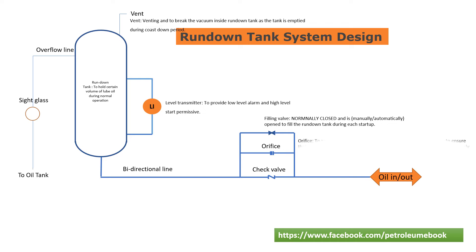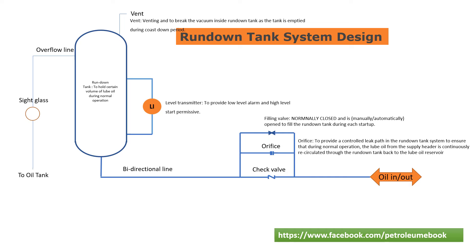The orifice plate provides a controlled leak path in the rundown tank system to ensure that during normal operation, the lube oil from the supply header is continuously recirculated through the rundown tank back to the lube oil reservoir. The check valve blocks the main lube oil flow to the rundown tank during normal operation.